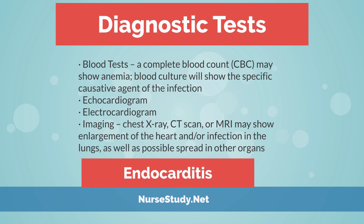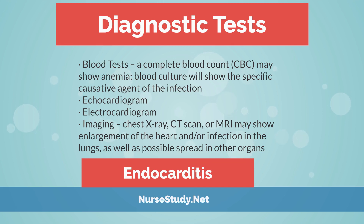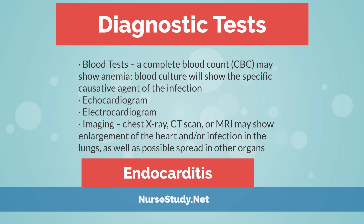Diagnostic tests for endocarditis include blood tests: a complete blood count (CBC) may show anemia, and a blood culture will identify the specific causative agent of the infection. Additional tests include echocardiogram and electrocardiogram. Imaging such as chest X-ray, CT scan, or MRI may show enlargement of the heart and/or infection in the lungs, as well as possible spread to other organs.